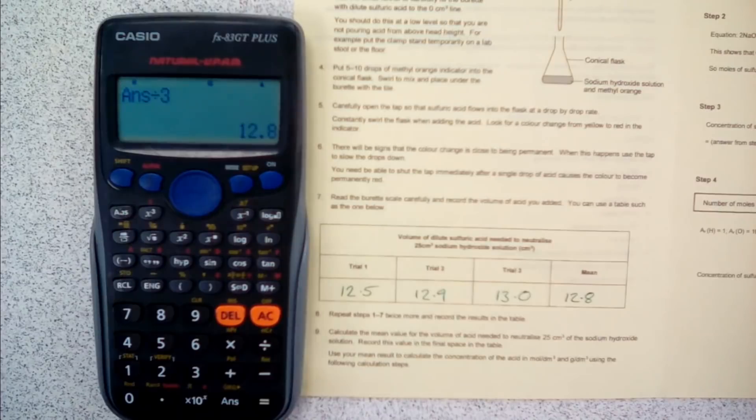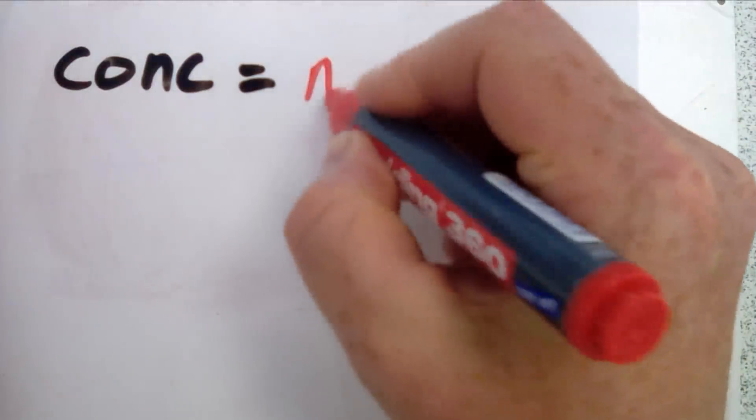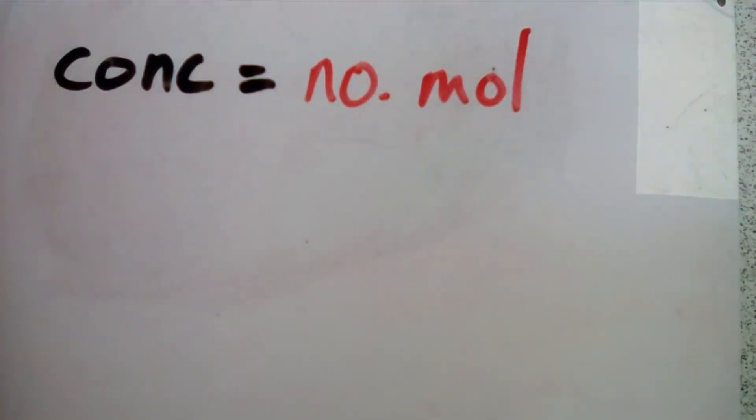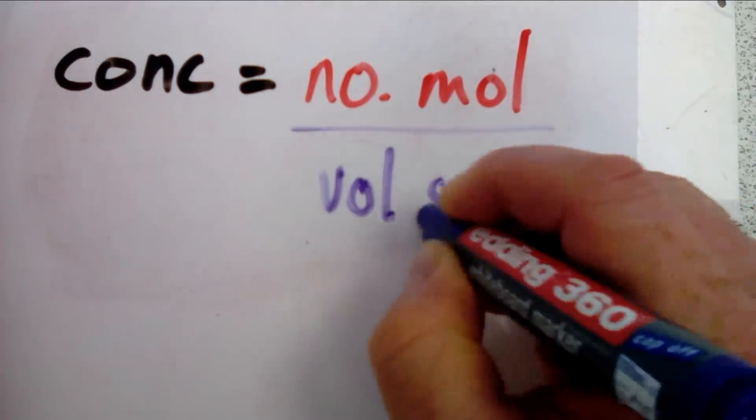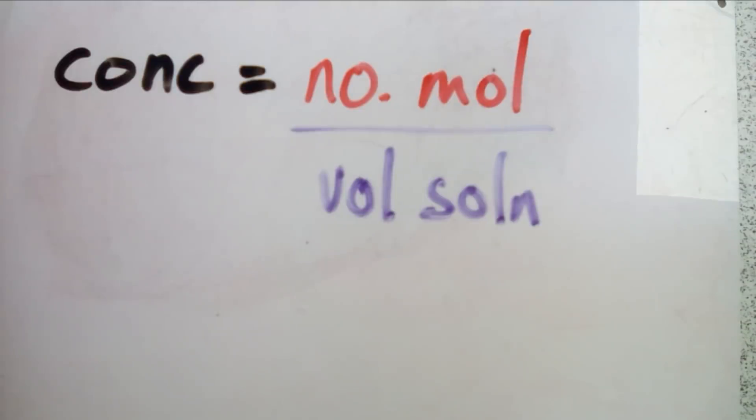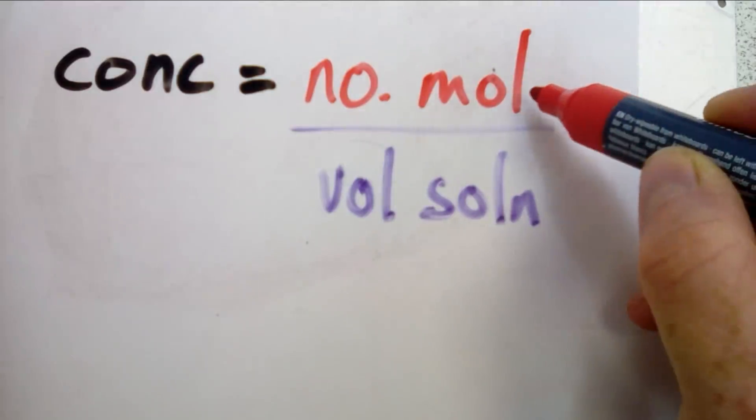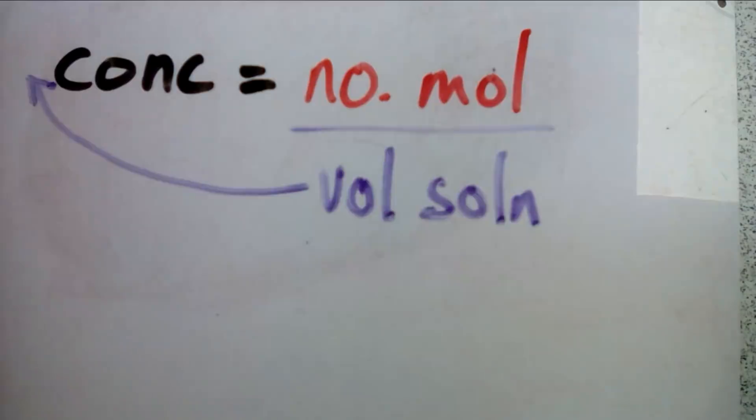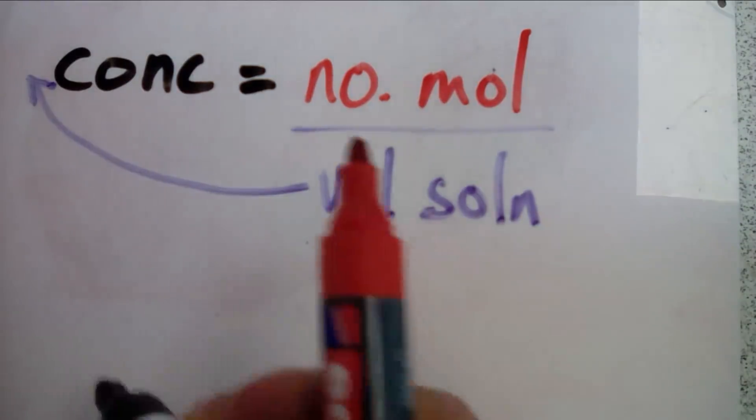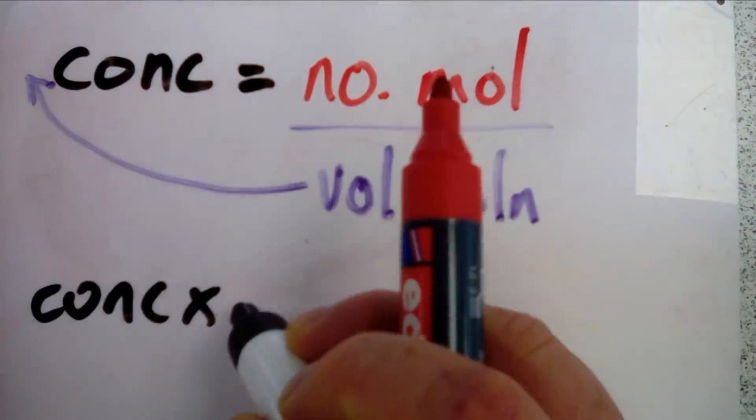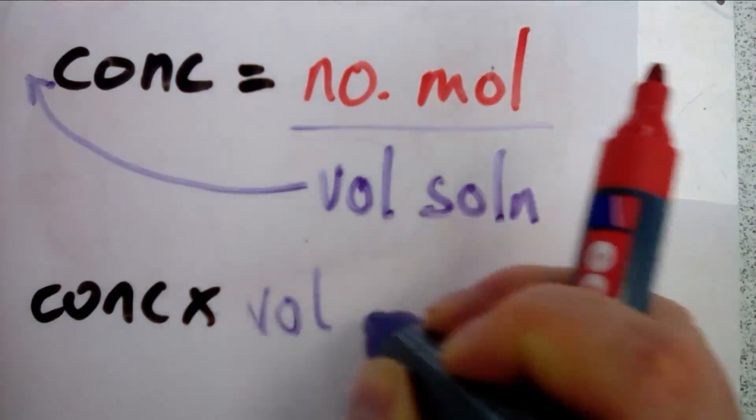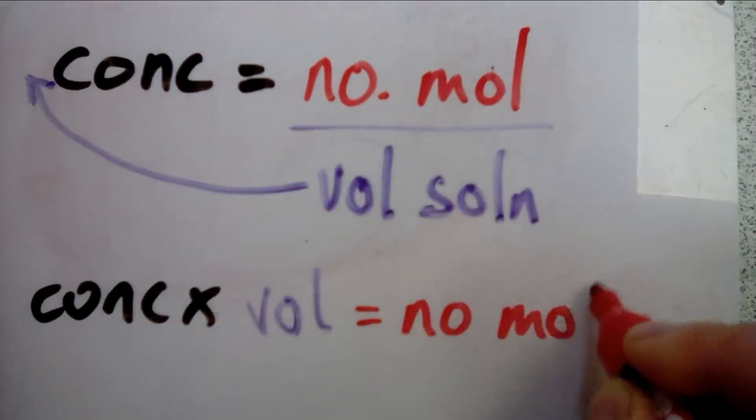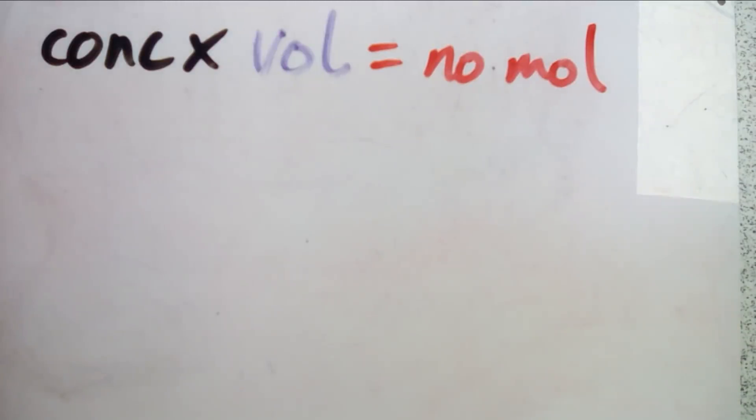To work out the concentration of a solution, you need to do the number of moles divided by the volume of the solution. We want to work out the number of moles of sodium hydroxide, which is this one, so we need to get that on its own. To do that we've got to move the volume of solution up to that side of the equation, which gives us concentration multiplied by the volume equals the number of moles.